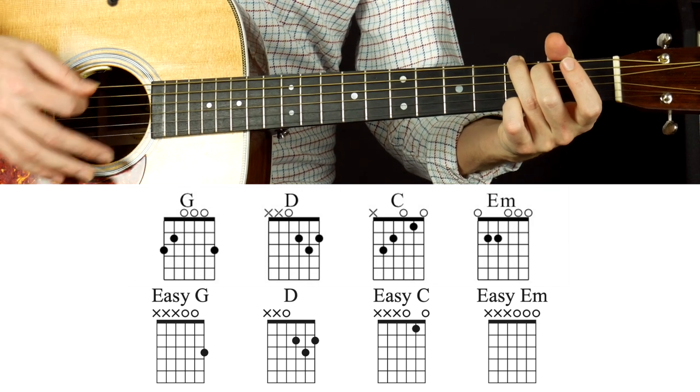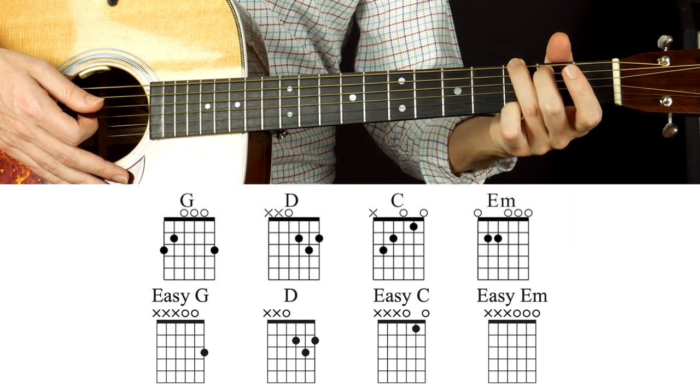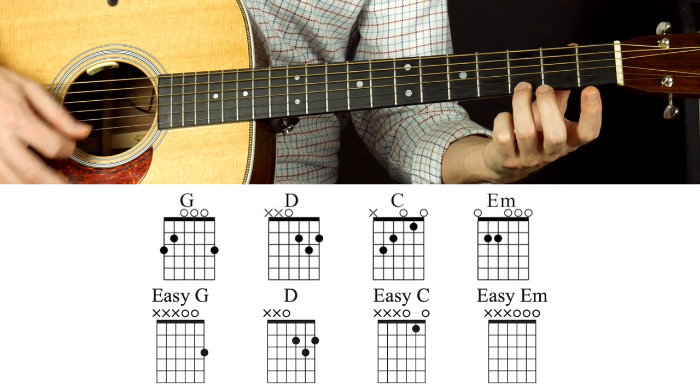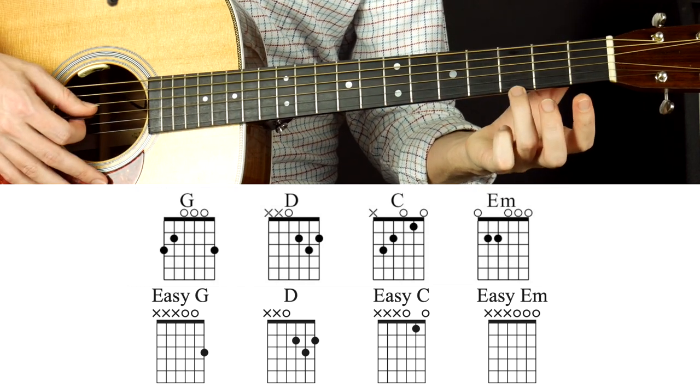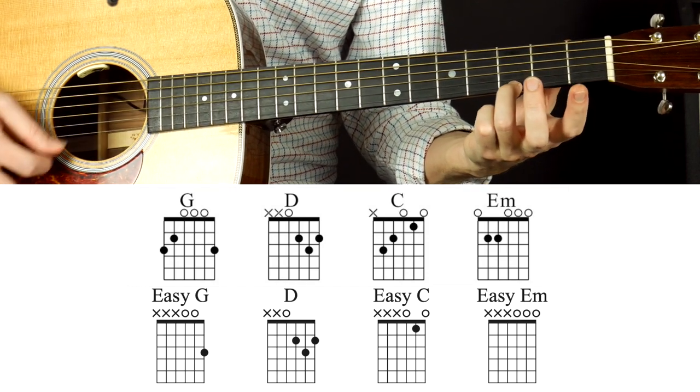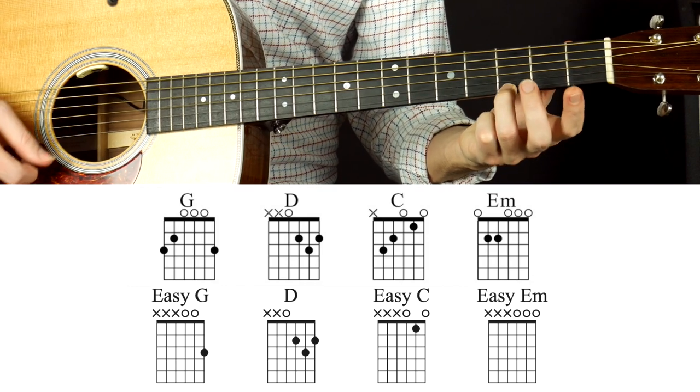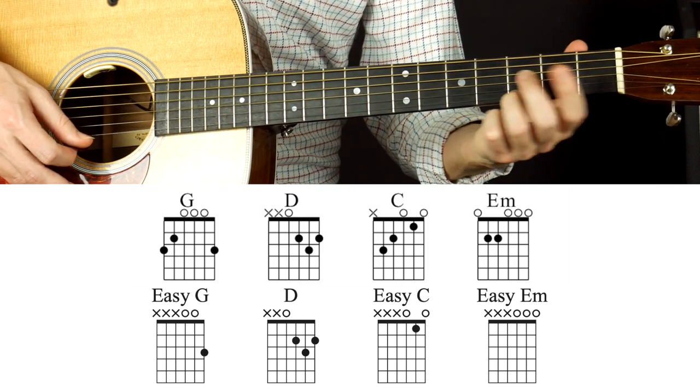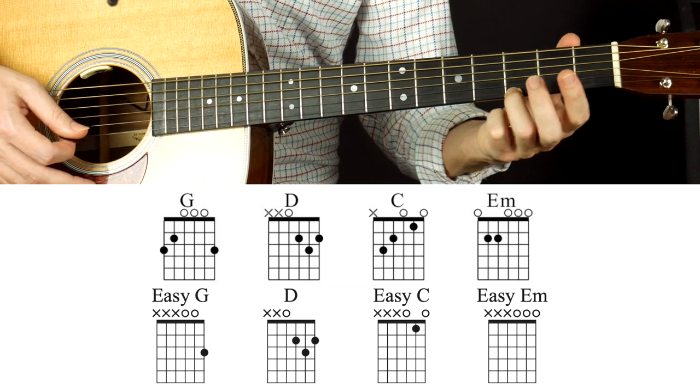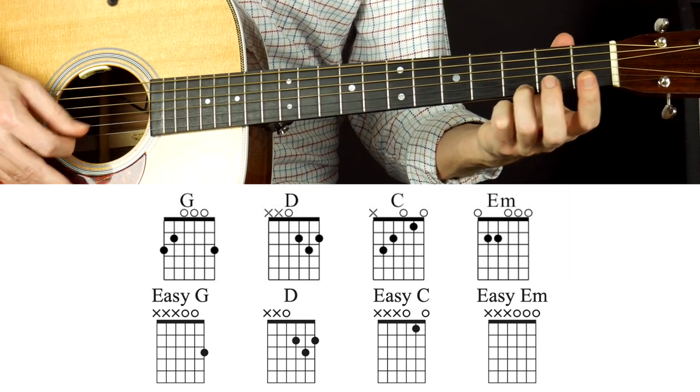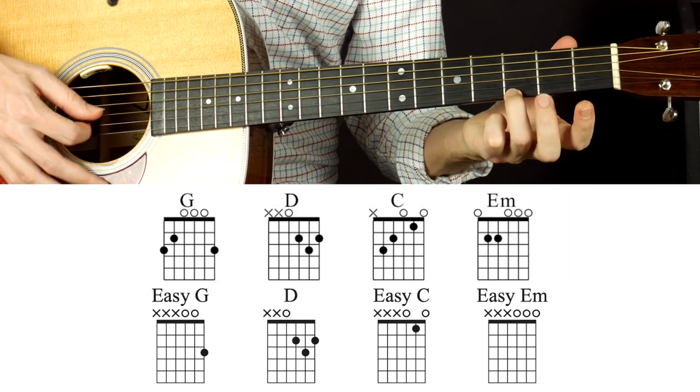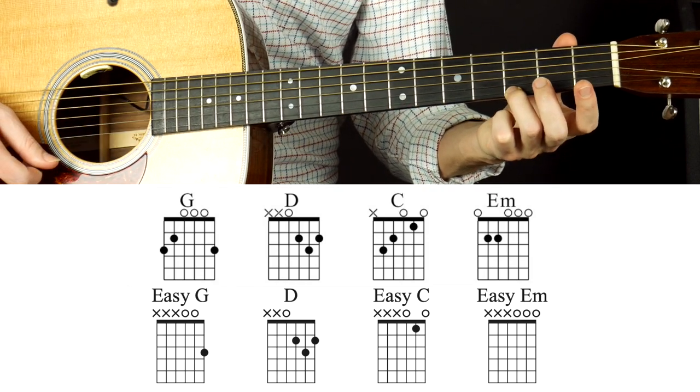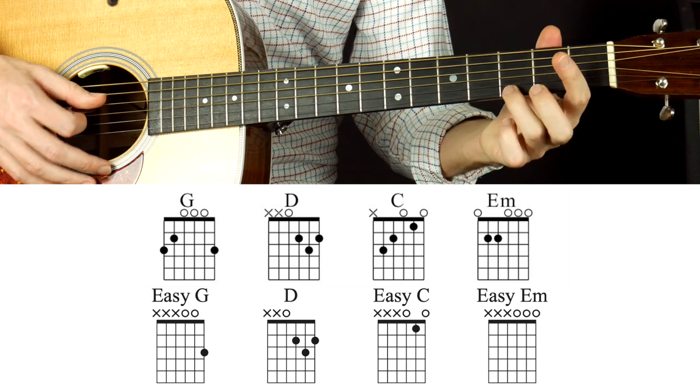Alright, so then the easy way to play this would be just the top three strings, and just put the third finger, the ring finger, on that third fret. And with any chords, you want to be as close to the fret wire as possible. That gets you a stronger tone and requires less effort. Then coming back here, so either like that, or like this, that's what we're going for.